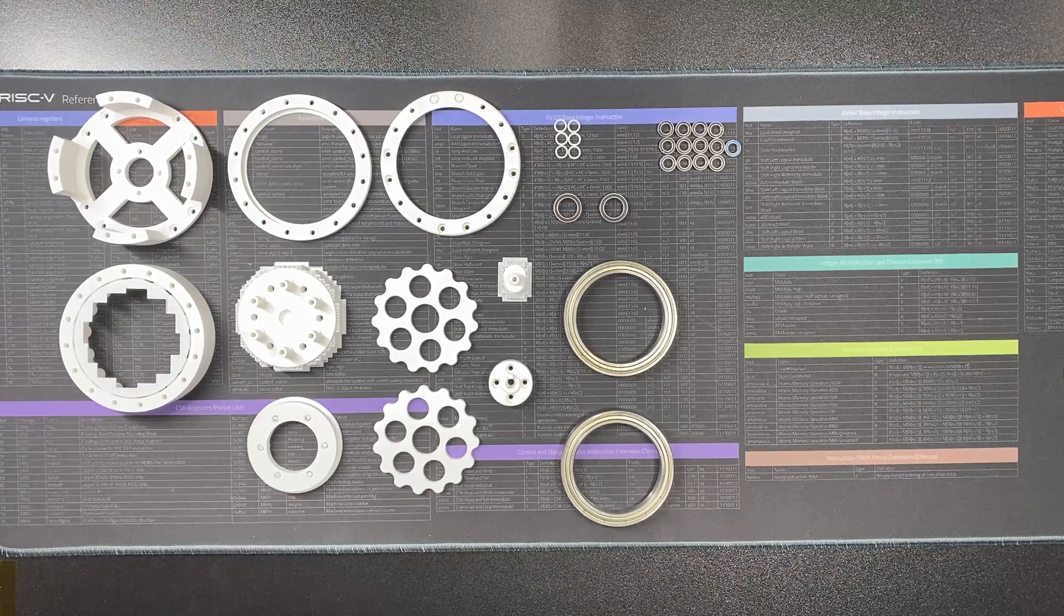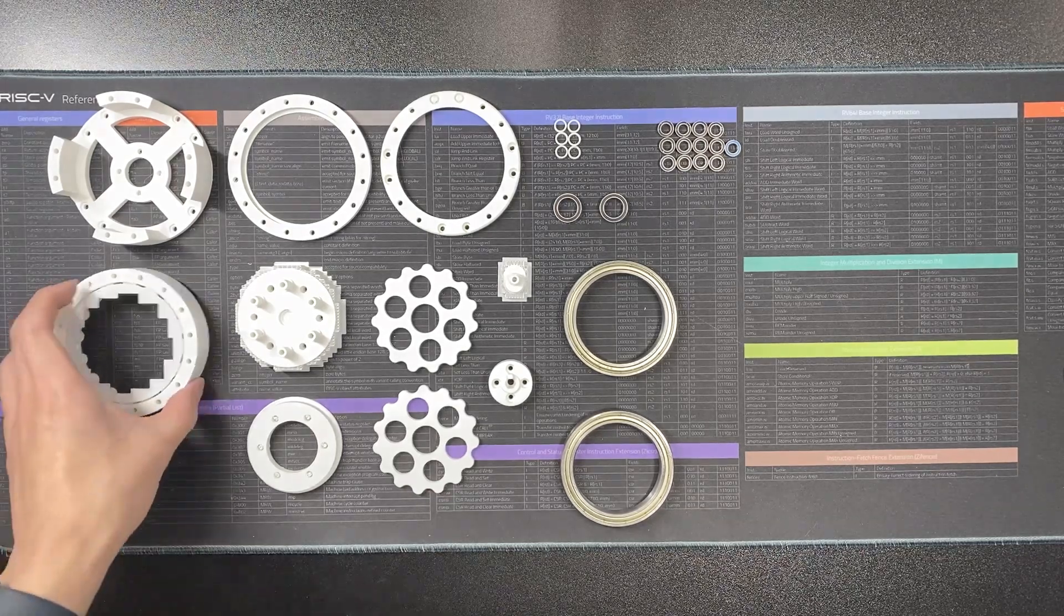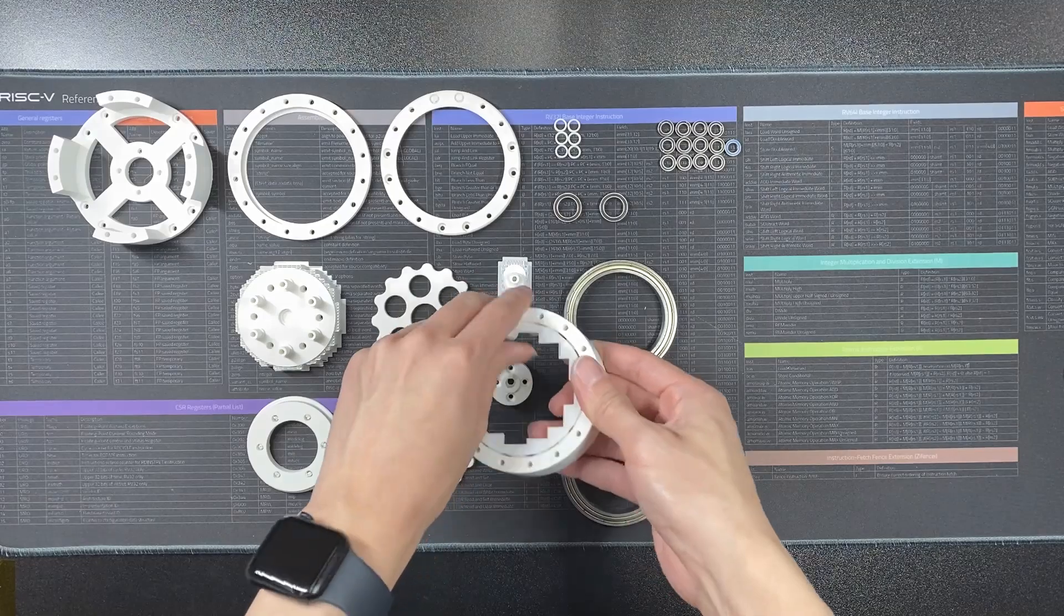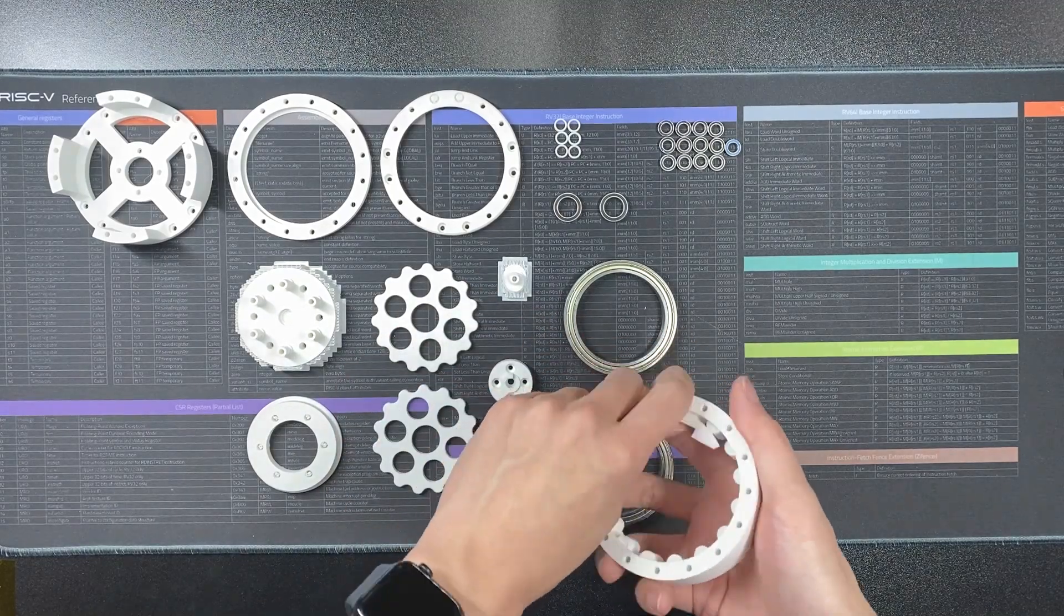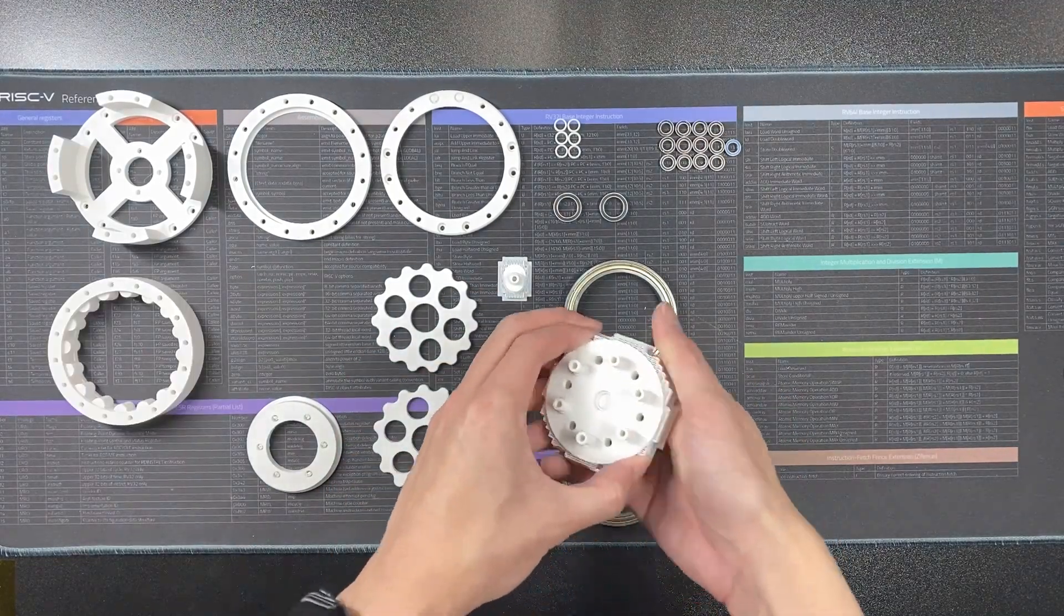In this video tutorial, we will show you how to assemble the 6512 actuator. First, start by removing the support material from the printed parts.